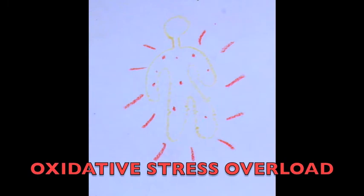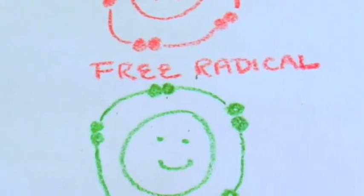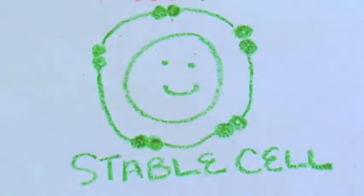Oxidative stress is a state of the body in which there is an excess of free radicals present. A free radical is a molecule in an unstable state because it's missing an electron.